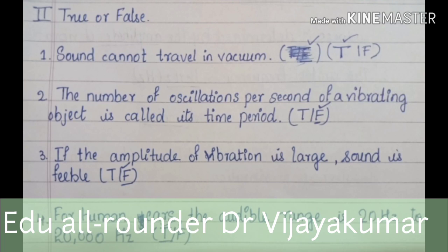The number of oscillations per second of a vibrating object is called a time period. If the amplitude of vibration is large, sound is feeble. For human ears, the audible range is 20 Hz to 20,000 Hz.